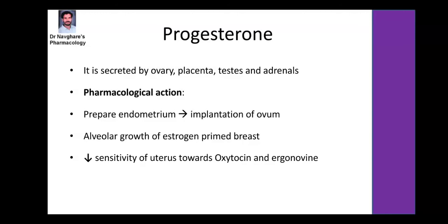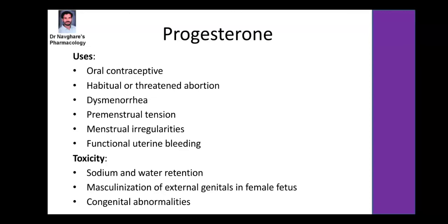Progesterone is secreted by the ovary, placenta, testes, and adrenal gland. It possesses pharmacological actions like preparing the endometrium for implantation of the ovum, alveolar growth and estrogen-primed breast stimulation. It decreases sensitivity of the uterus towards oxytocin. Uses include oral contraceptives, management of habitual or threatened abortion, dysmenorrhea, premenstrual tension, menstrual irregularities, and functional uterine bleeding. Side effects include sodium and water retention causing weight gain, masculinization of external genitals in female fetus, and possible congenital abnormalities.